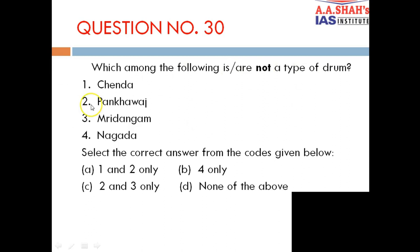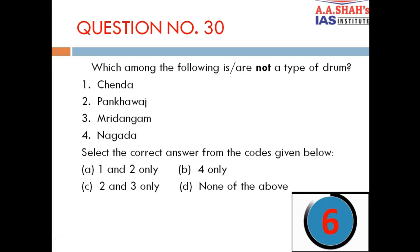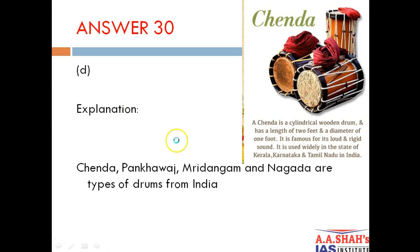Question 30: Which among the following are NOT a type of drum? 1. Chenda, 2. Pakhawaj, 3. Mridangam, 4. Nagada. The correct answer is D — none of the above, because all four are types of drums. Chenda is a cylindrical wooden drum from South India, with a length of 2 feet and diameter of 1 foot, widely used in Kerala, Karnataka and Tamil Nadu, famous for its loud and rigid sound. Pakhawaj, Mridangam and Nagada are also all types of drums from India.